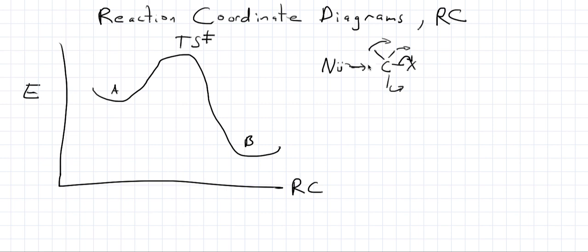So a reaction coordinate encompasses all the movements that have to happen to get the geometry to go from reactants to products.